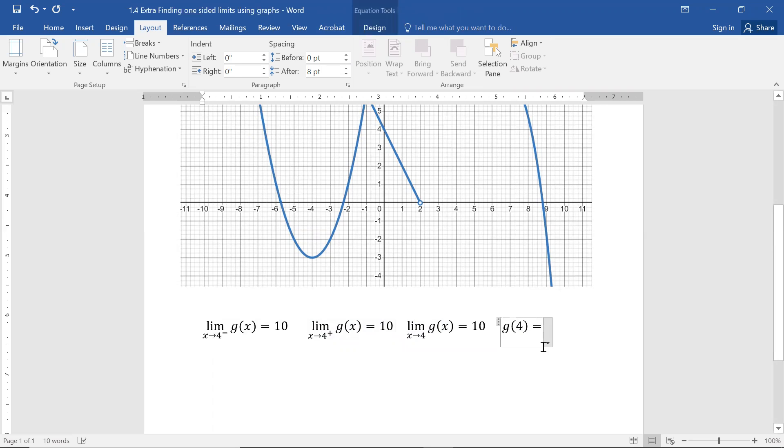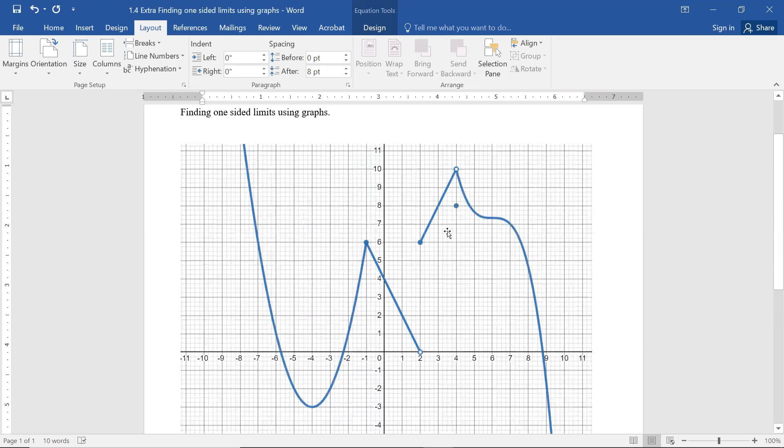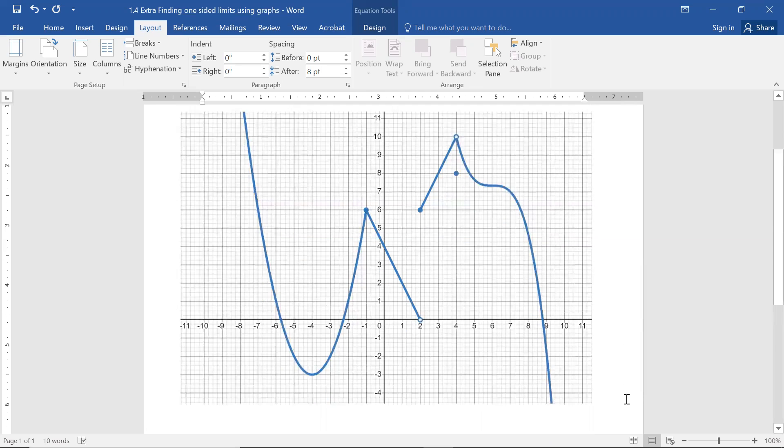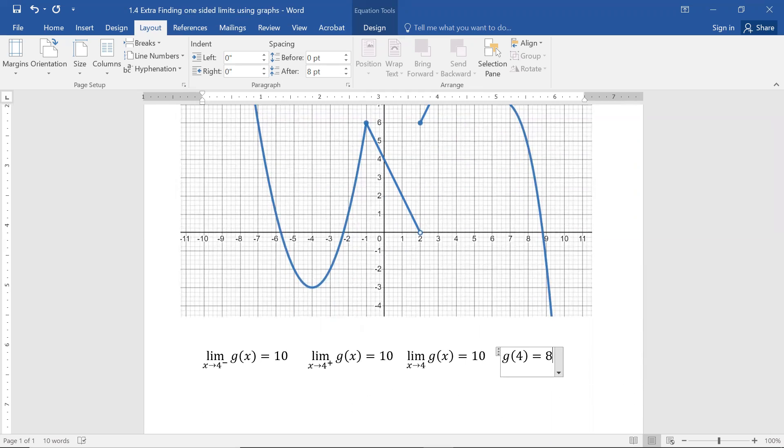Lastly, remember that g of 4, that's where the closed dot is, and the closed dot or the filled-in dot is at the point (4, 8). So g of 4 is actually 8.